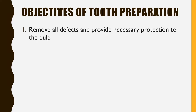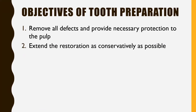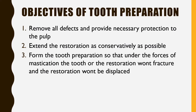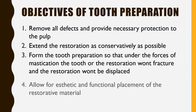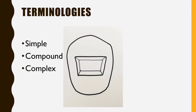The objectives of tooth preparation — what we want to achieve — are: first, remove all defects and provide necessary protection to the pulp; second, extend the restoration as conservatively as possible so we don't weaken the tooth structure; third, form the tooth preparation so that under masticatory forces the tooth or restoration won't fracture or displace; and fourth, place the restoration in a way that is aesthetically pleasing and gives proper form and function.